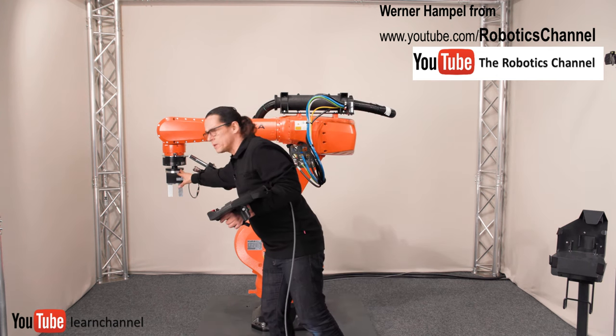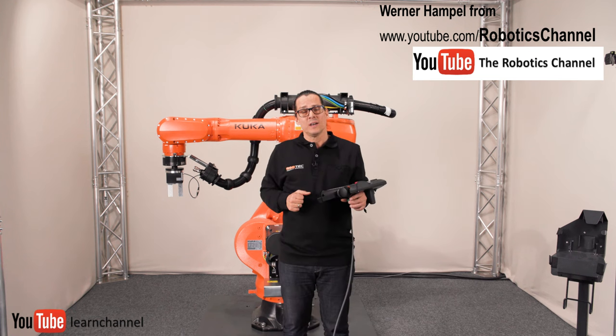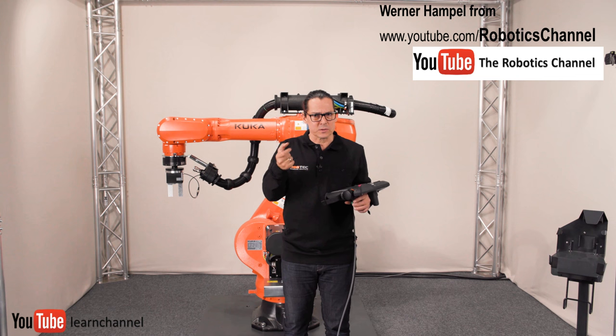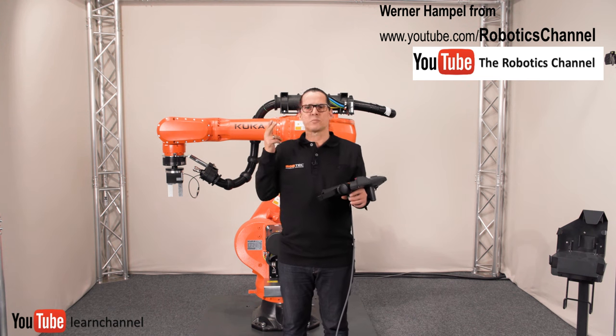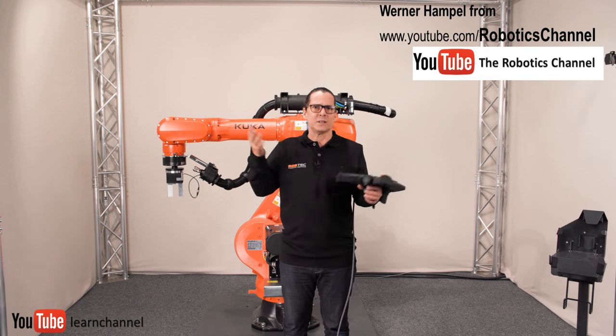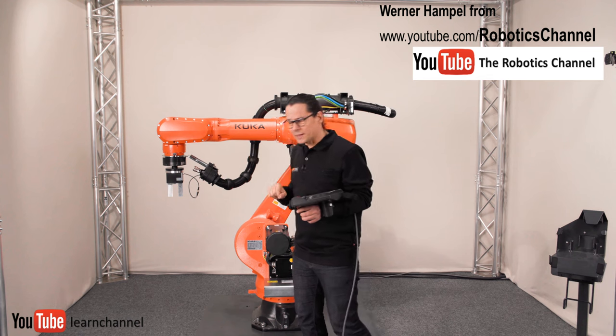which provides maybe the gripper or any tool on axis 6 of the robot by electrical power. You can check the signals, for example, for the gripper. You can provide cooling water or high power, whatever, maybe air. Whatever you need is here in the tube package.